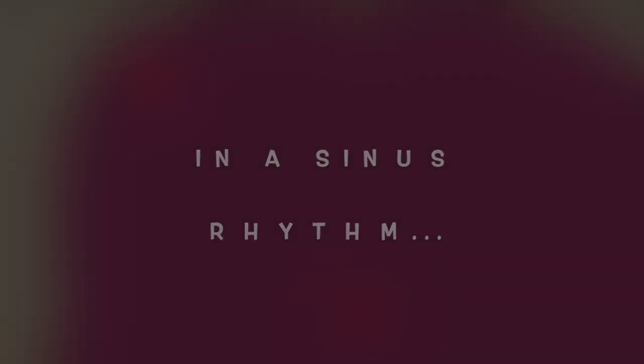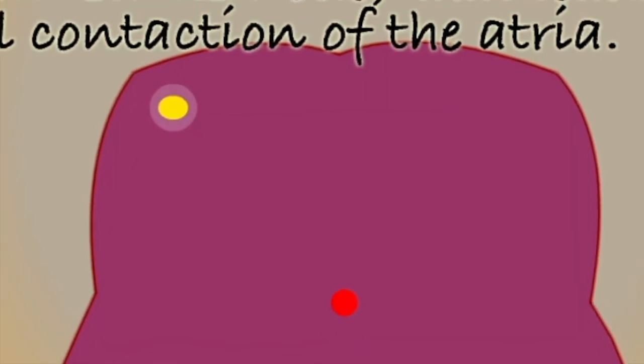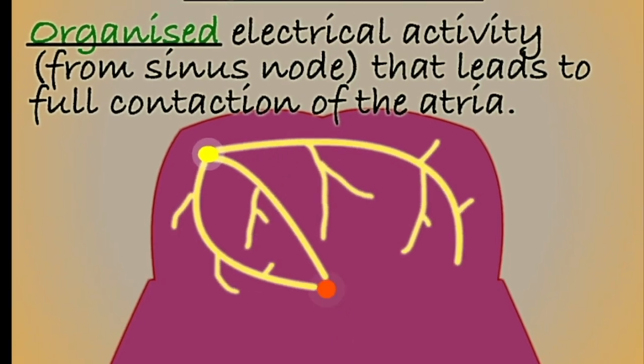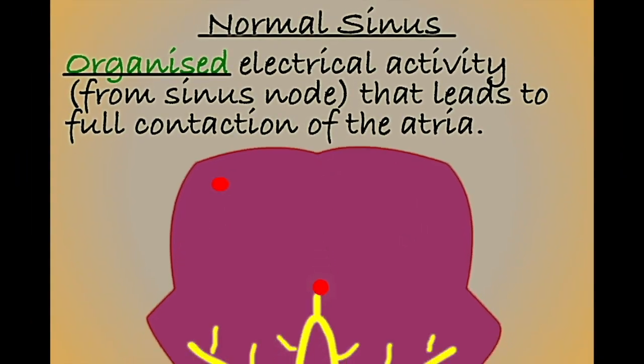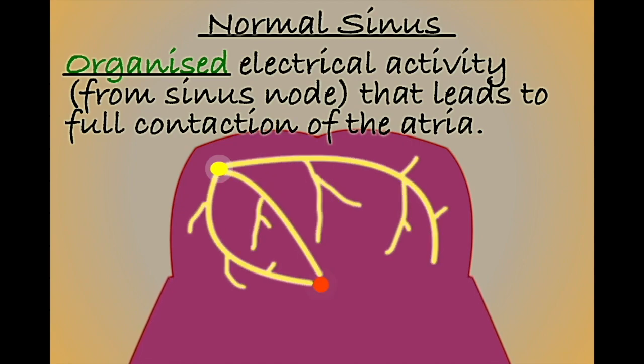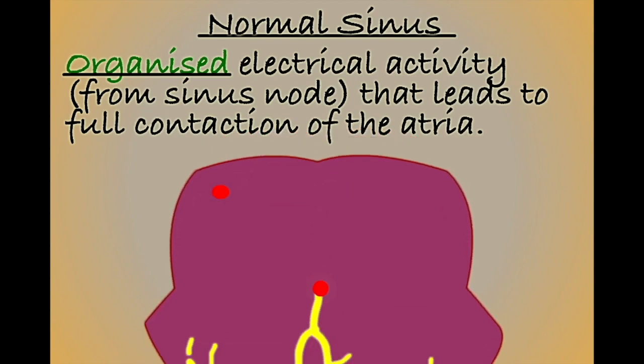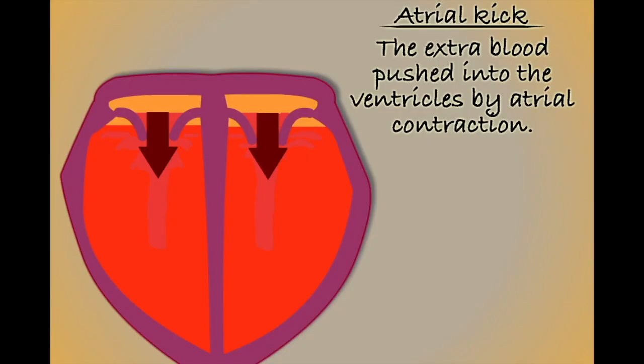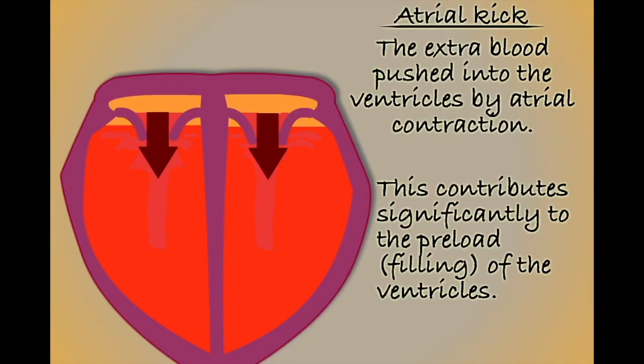In a sinus rhythm, electrical impulses are produced at regular intervals by the sinus node, from where they spread through the atrium in an organised manner that causes the underlying cardiac muscle to contract, efficiently squeezing blood into the ventricles below.